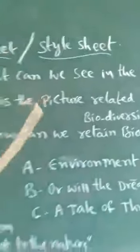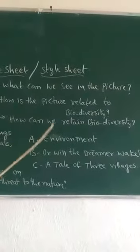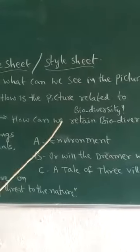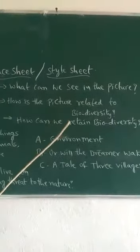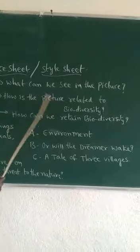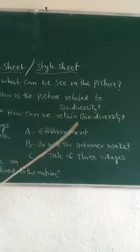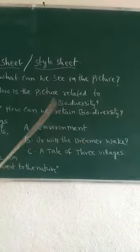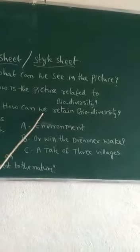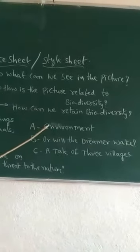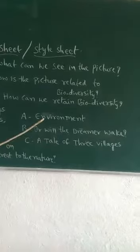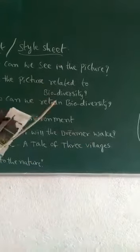Girls are becoming extinct in society. The female ratio in society is showing great variation. So girls are displayed in the picture. How is it related to biodiversity? Biodiversity means that in the universe, in nature, equally human beings, animals, and every living thing should have life. As girls are shown as part of nature, it is because they are becoming endangered. That is why girls are shown in the picture.